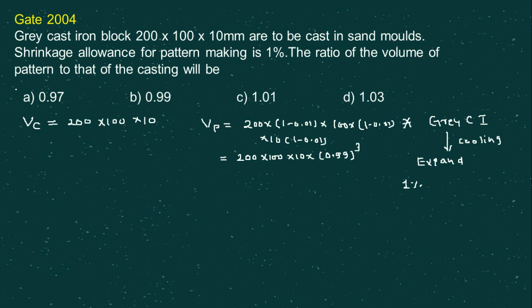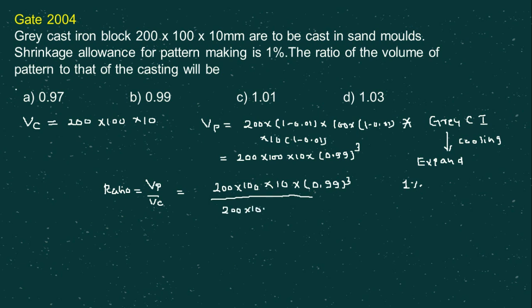Now we calculate the ratio of the volume of the pattern to the volume of the casting. This is (200 × 100 × 10 × 0.99³) divided by (200 × 100 × 10), which equals 0.99³ ≈ 0.97. Hence the correct option is A.